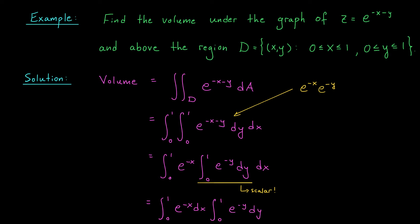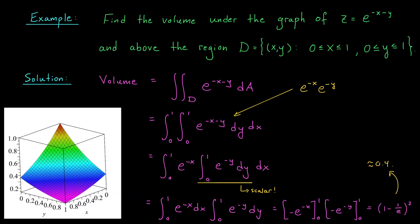We can rewrite this as the integral from 0 to 1 of e to the minus x dx, times the integral from 0 to 1 of e to the minus y dy. An antiderivative of e to the minus x with respect to x is minus e to the minus x, and similarly for y. Plugging in our bounds, we get a final answer of 1 minus 1 over e squared, which is roughly 0.4. Looking at the graph of our function over region D, we can actually see the volume we've just computed. This trick always works when integrating over a rectangular region with constant bounds and an integrand that factors into a function of x times a function of y.